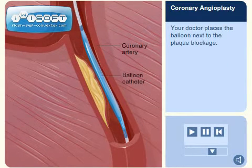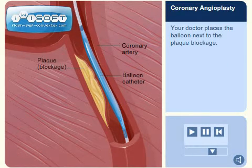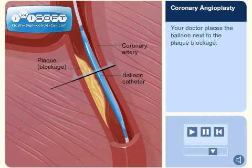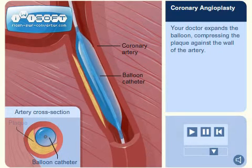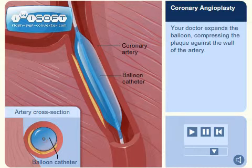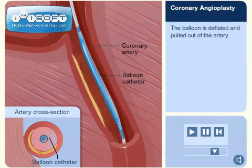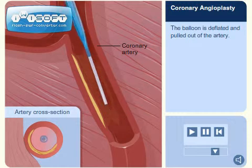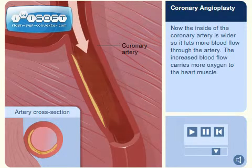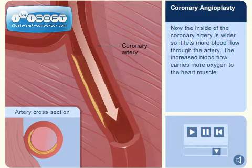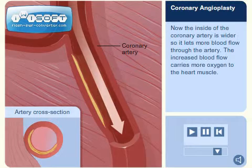Your doctor places the balloon next to the plaque blockage. Your doctor expands the balloon, compressing the plaque against the wall of the artery. The balloon is deflated and pulled out of the artery. Now the inside of the coronary artery is wider, so it lets more blood flow through the artery. The increased blood flow carries more oxygen to the heart muscle.